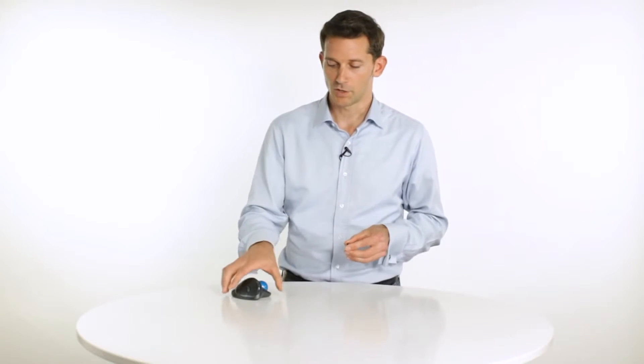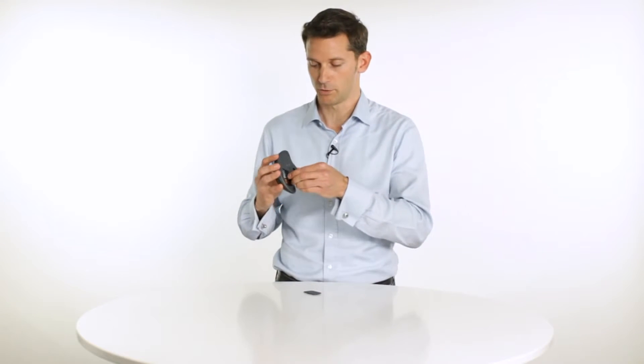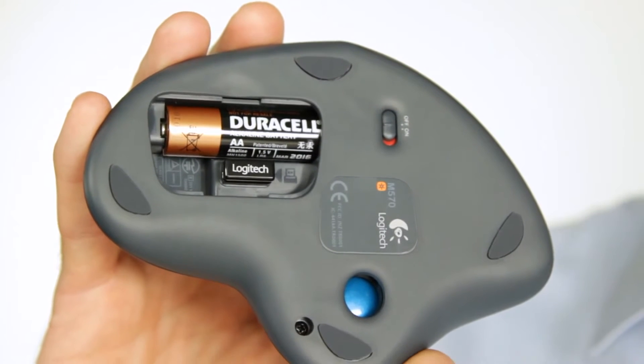With the unifying receiver, that also means you can easily add other compatible unifying keyboards and mice to the same receiver without filling up all of your USB ports. Should you want to put it away, you can also take it and tuck it in the underside of the M570. It has a little receiver location right here.